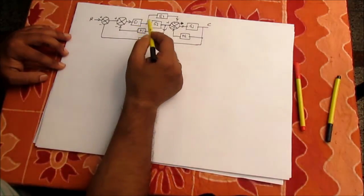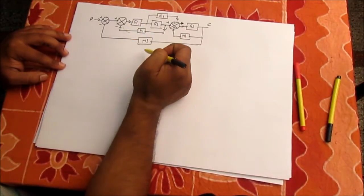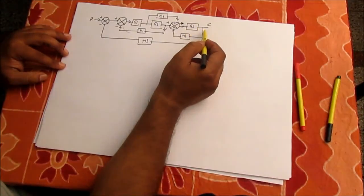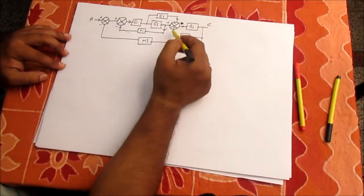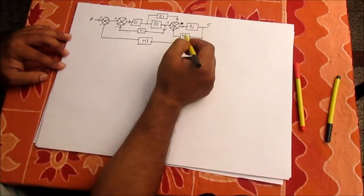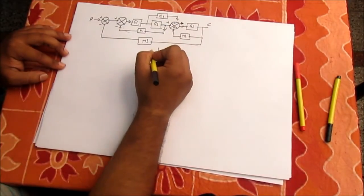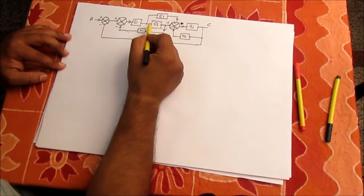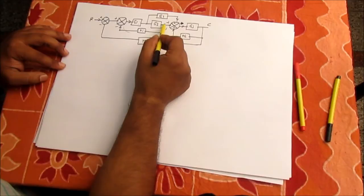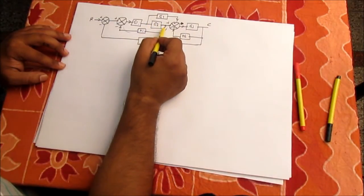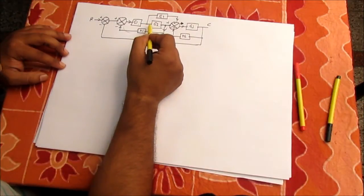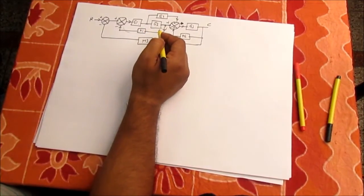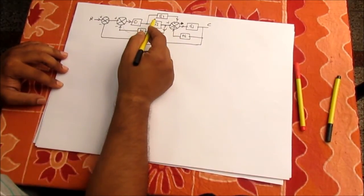G3 and H2 can be made into a complete transfer function easily. Now, when I shift this takeoff point from here to here, this point was being multiplied by G2. But after shifting, it will no longer be multiplied by G2, so I will change H1 to H1 over G2. Then G2 and G4 will be in parallel.